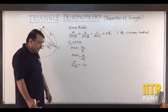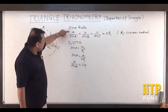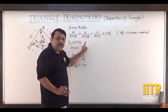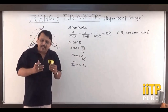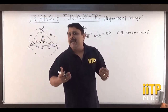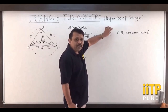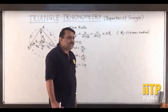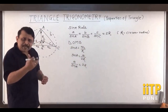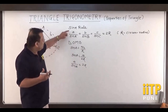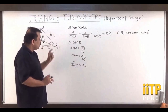Remember: a/sin A = b/sin B = c/sin C = 2R. If we consider 2R equal to some constant K, then a = K sin A, b = K sin B, and c = K sin C, where K is the constant of proportionality. We can always express sides a, b, c in terms of sin A, sin B, sin C with a proportionality constant. While solving problems on properties of triangles, we frequently use this fundamental rule.